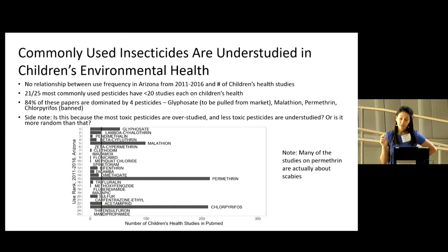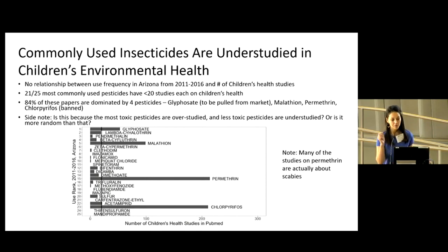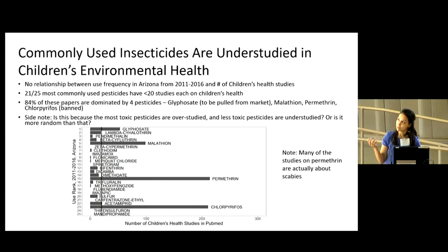There are huge gaps in the number of studies for the vast majority of the most commonly used pesticides. I wondered if maybe the most toxic pesticides are overstudied and the least toxic are understudied — maybe we don't care about the ones with gaps because they're the least toxic. This might be supported by the fact that two of the four most commonly studied pesticides have been recently banned or pulled from the market.